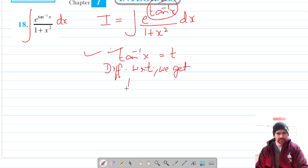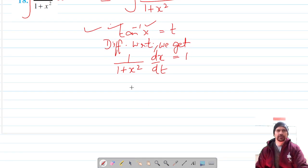So differentiation of tan inverse x is 1 upon 1 plus x squared and because we are differentiating it with respect to t.